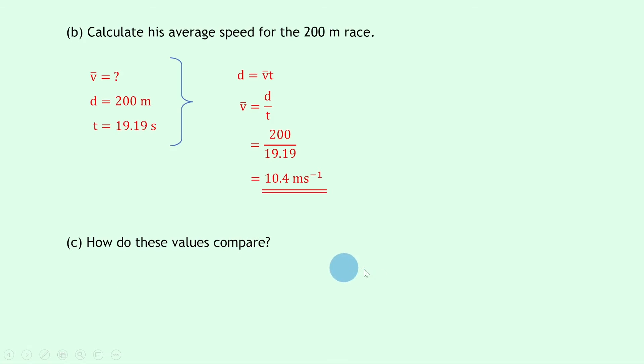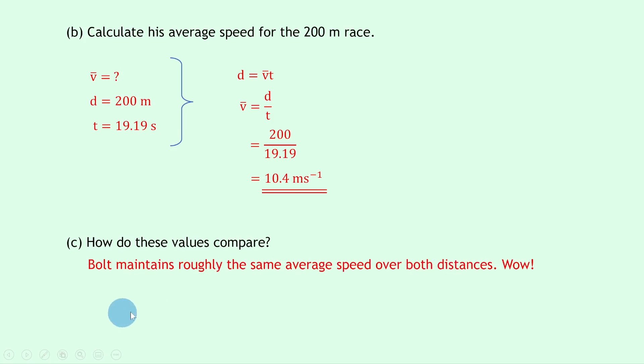Part c says: how do these values compare? Well, in part a we also got an answer of 10.4 meters per second to one decimal place, so we can say that Bolt maintains roughly the same average speed over both distances. That's quite impressive — to keep up roughly the same average speed over twice the distance, because most runners will tire out towards the end of a sprint, whereas it's clear that Bolt didn't really in this case.